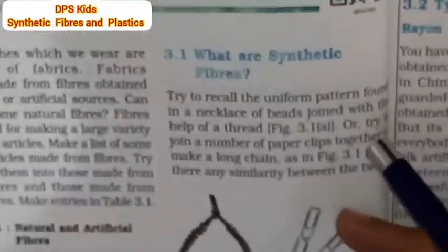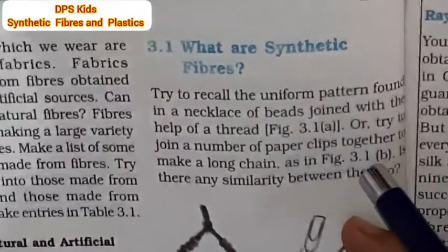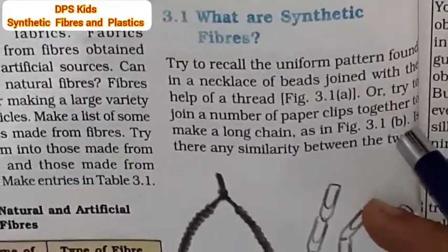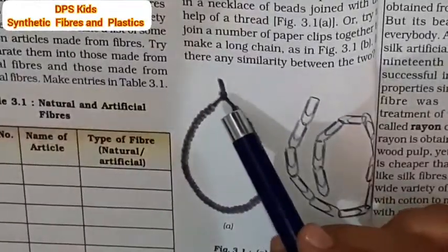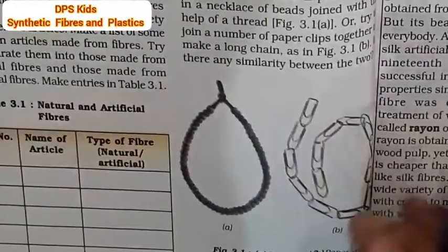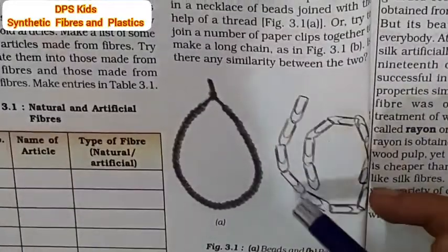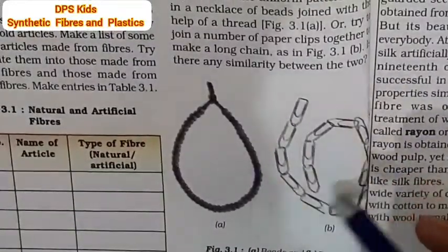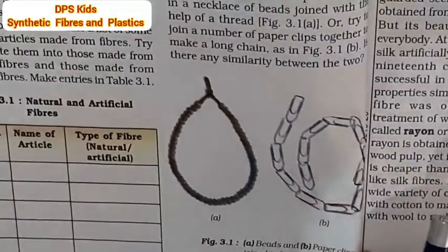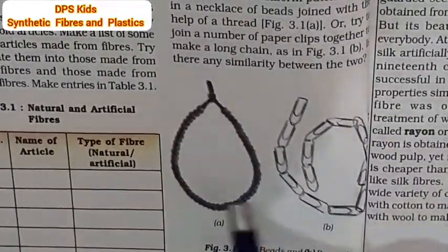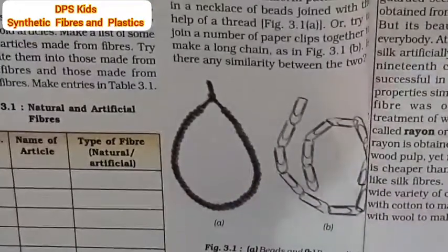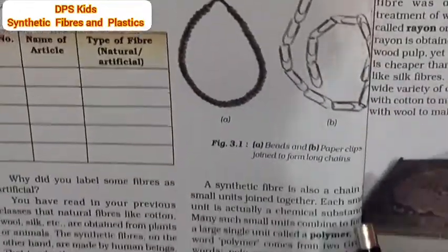What are synthetic fibres? Try to recall the uniform pattern found in a necklace of beads joined with the help of a thread. You can see that it has different beads joined on a thread. Also, try to join a number of paper clips together to make a long chain, as shown in the figure. Is there any similarity between the two?